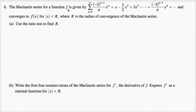The Maclaurin series for a function f is given in sigma notation, and they expand it out. It converges to f(x) for the absolute value of x being less than r, where r is the radius of convergence of the Maclaurin series. Part A: use the ratio test to find r.